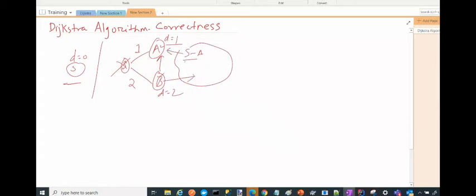SA distance is one. Any alternate path will go via B, and then some path and coming back to A. This is going to be some positive number.